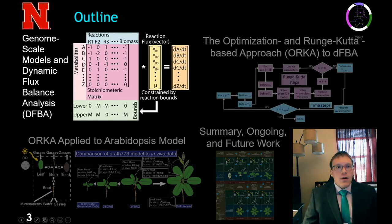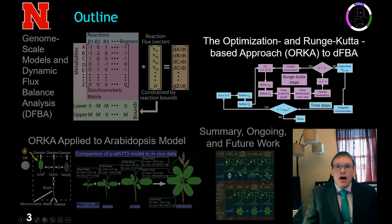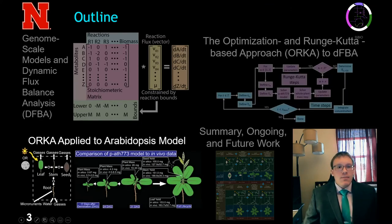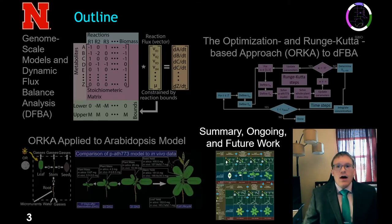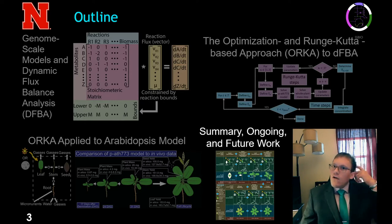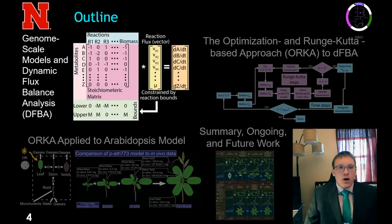We'll start by talking about genome scale modeling and dynamic flux balance analysis and some of the limitations of current DFBA techniques. We'll then introduce the optimization and Runge-Kutta based approach, or ORCA, to DFBA. Then we'll discuss ORCA being applied to a model of Arabidopsis, and finally we'll summarize the contents of this video and talk about some of our ongoing and future work.